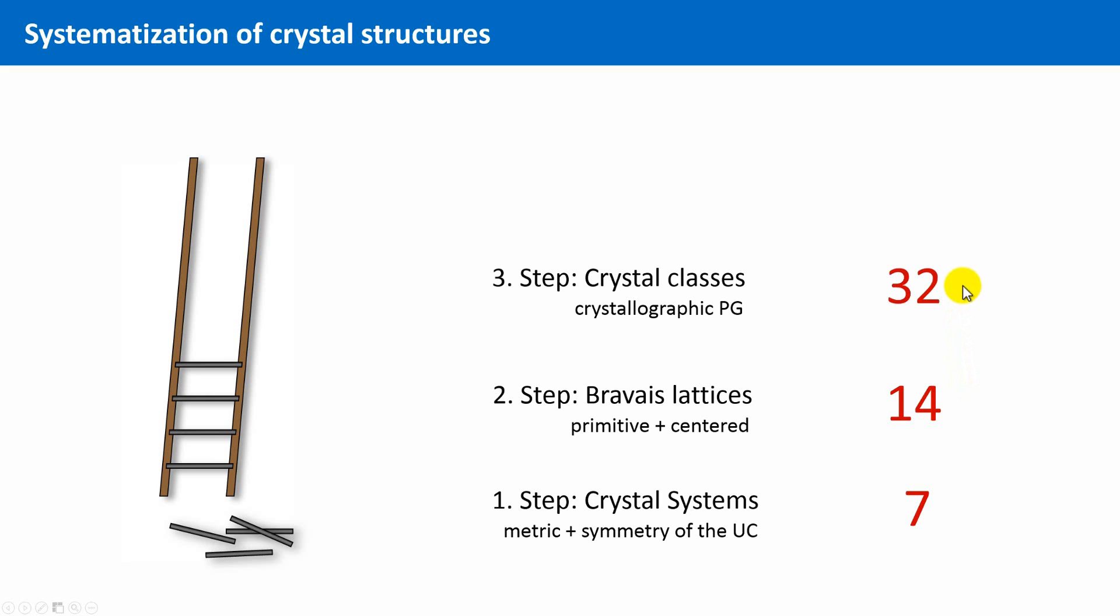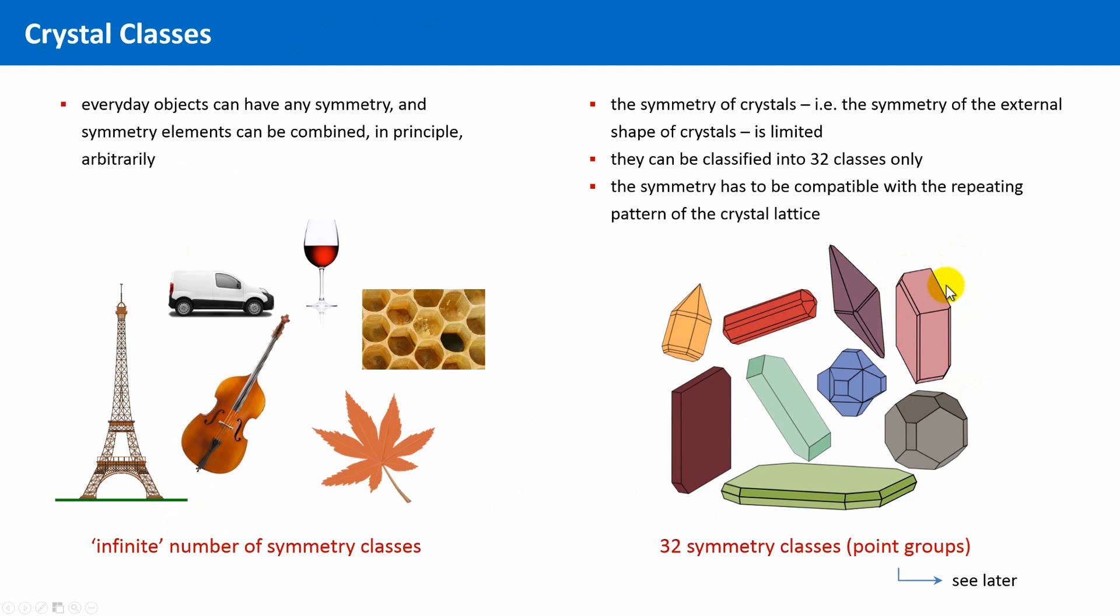The interesting thing, I think I mentioned that earlier, is that all imaginable crystals of the world can be classified into only 32 principally different classes. This means, whatever the concrete external shape of a crystal might be, according to their symmetry properties only 32 different forms exist.